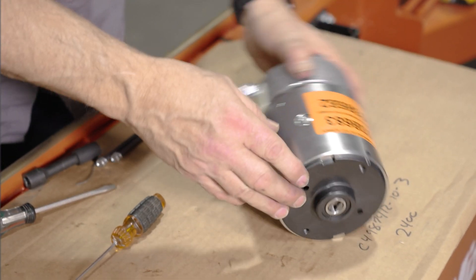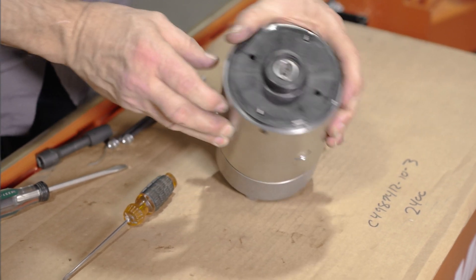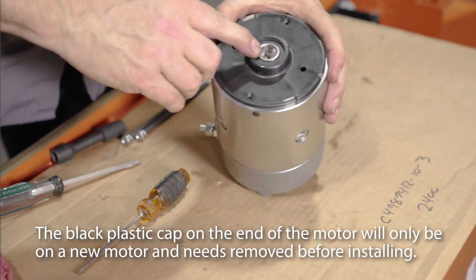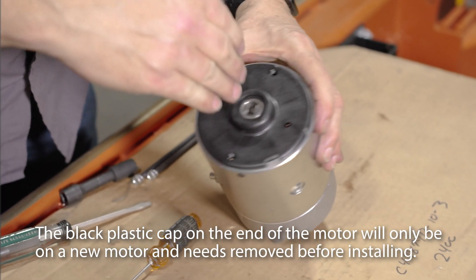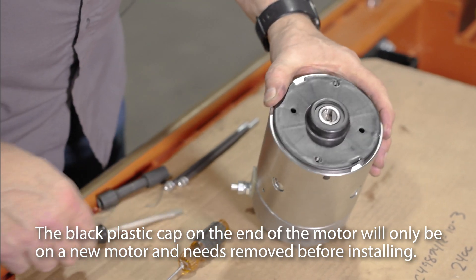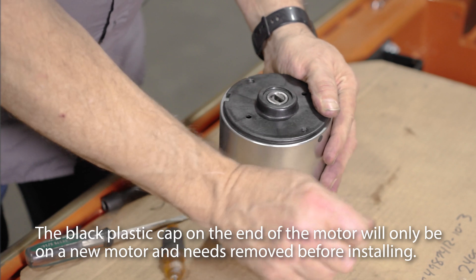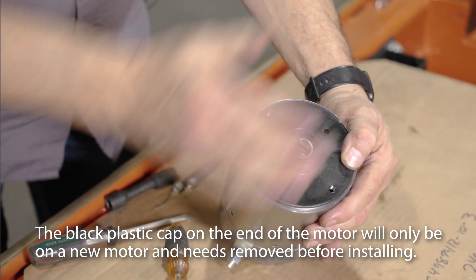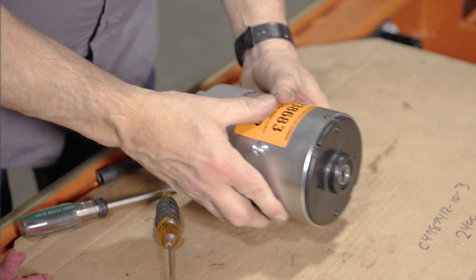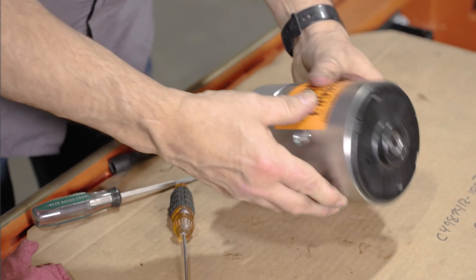One of the tips that you want to know is that the end of the motor has a slot in the shaft. The pump is going to have a tongue like a screwdriver. It would make it a lot easier for you if you reach into the pump and turn the shaft so that the slot is straight up and down. Then when you put it onto your sawmill, it'll slip on a lot easier.